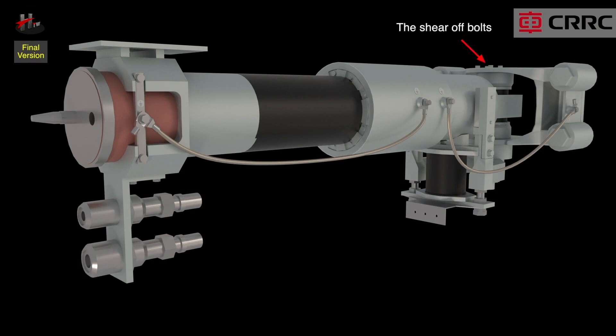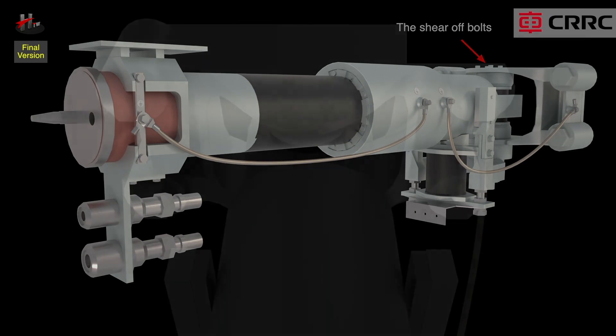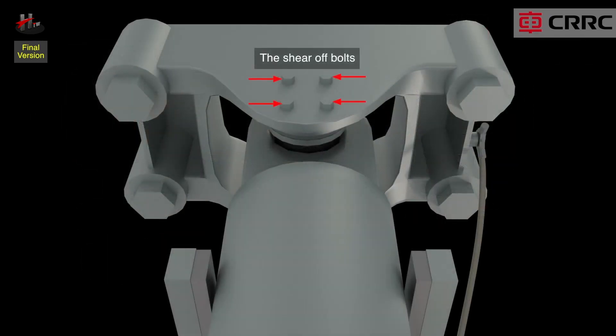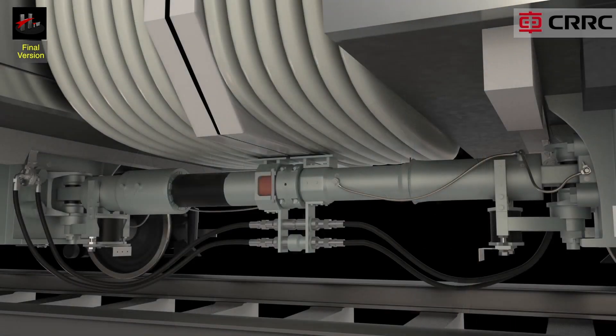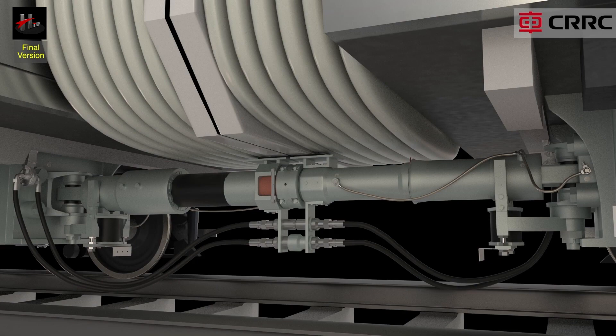The shear off bolts define the predetermined breaking point between the coupler and vehicle for impacts exceeding the predefined load. In case of a heavy impact, the shear off bolts shear off. The force flow is interrupted and the coupler shank is guided through the bearing bracket into the vehicle.